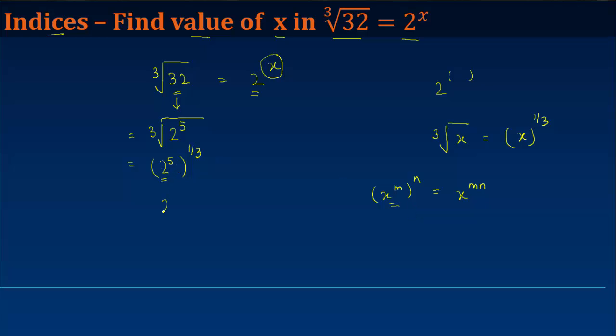So, in this case, x is 2, m is 5, and n is 1 by 3. Or in other words, this becomes 2 to the power 5 by 3.